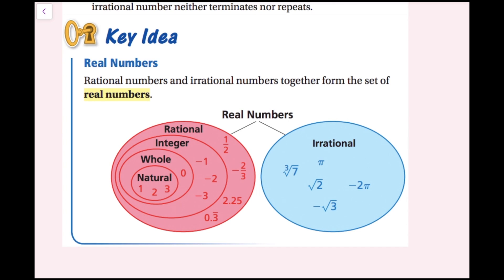Real numbers. Rational numbers and irrational numbers together form the set of real numbers. In pink we have the rational numbers, and in blue we have the irrational numbers. Within the rational numbers there are other subsets. Natural numbers are the numbers that you can count, starting with one: one, two, three, four, and so on.